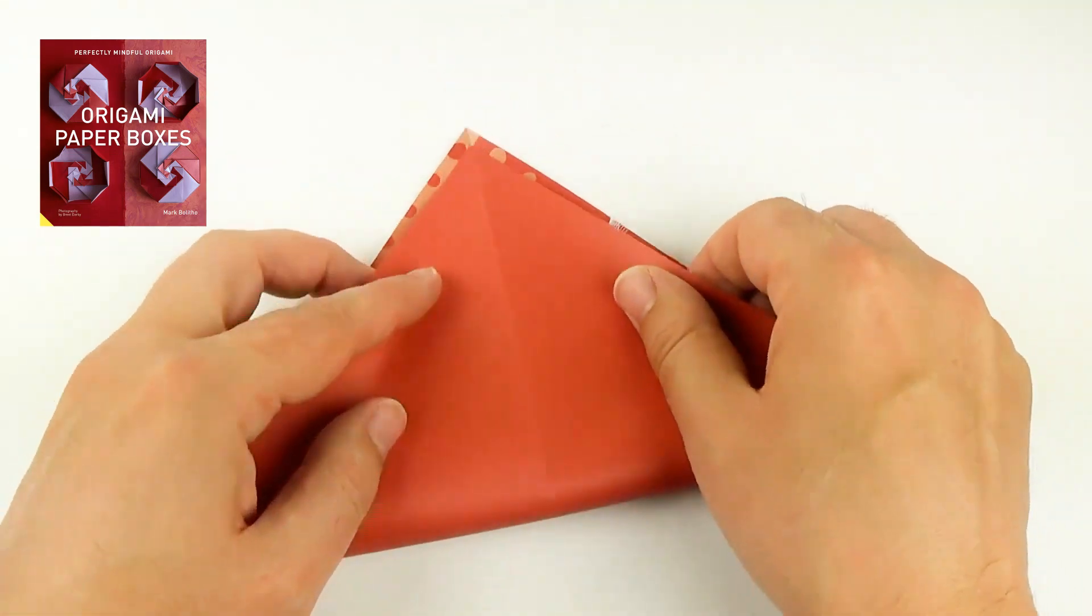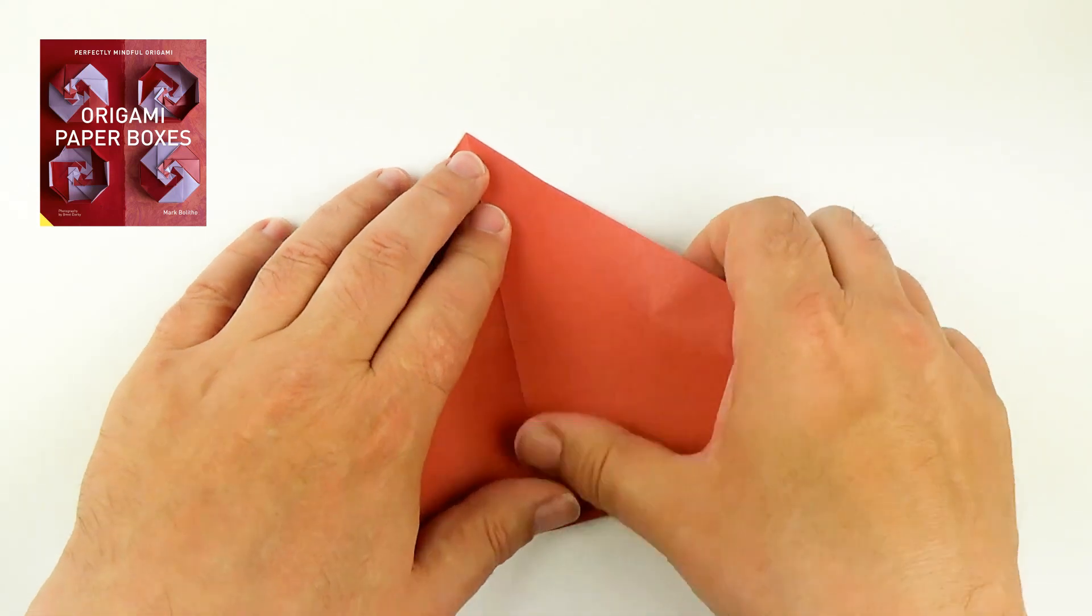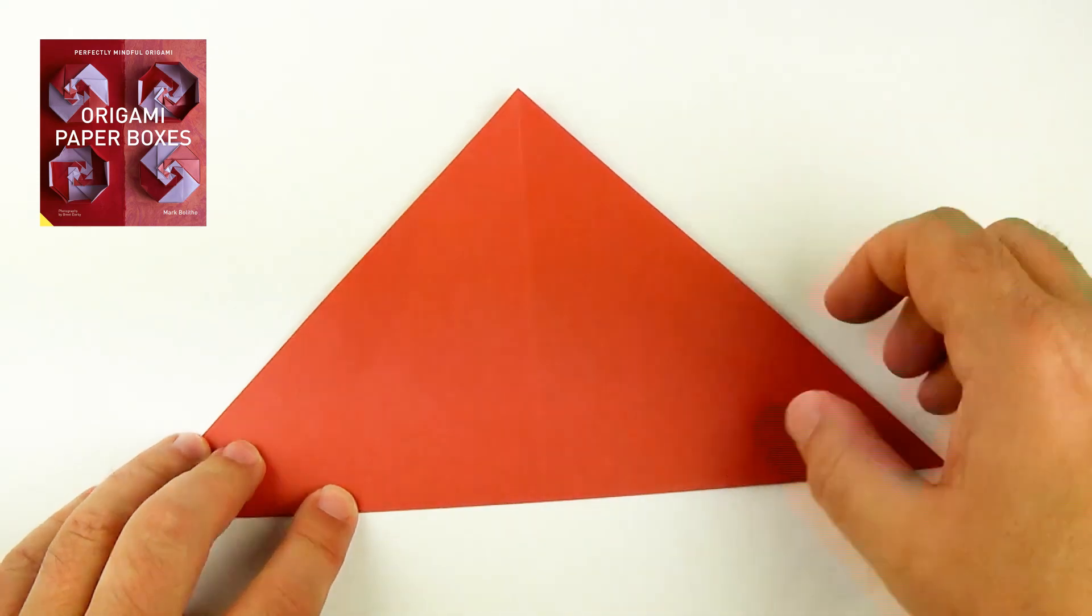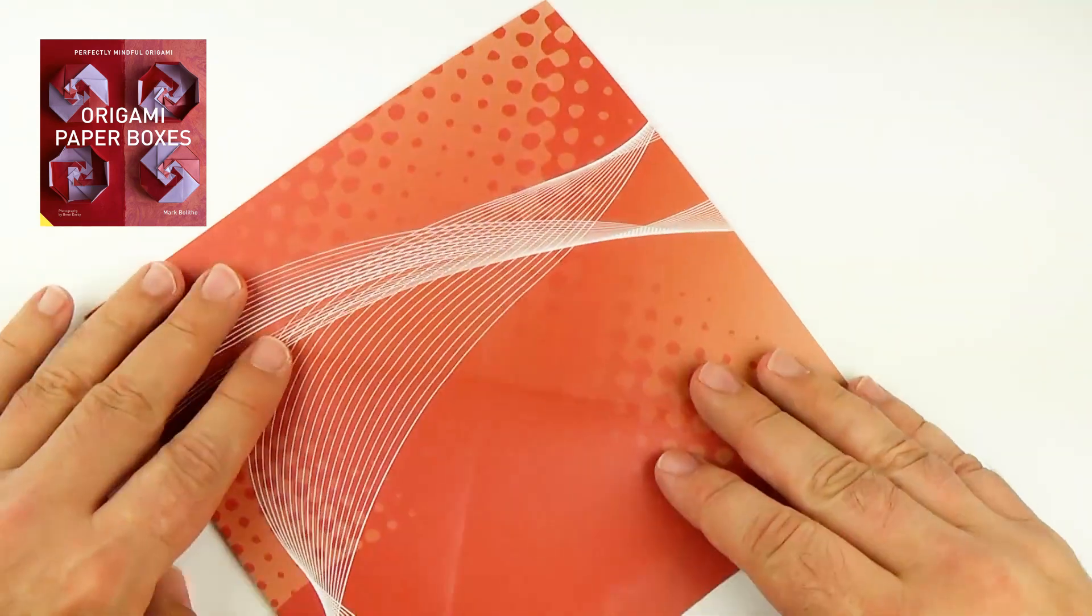Rotate, and then fold the crease on the opposite diagonal. Line the corner up and crease. Unfold.